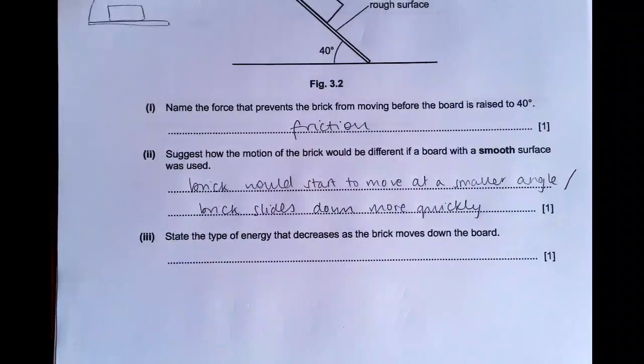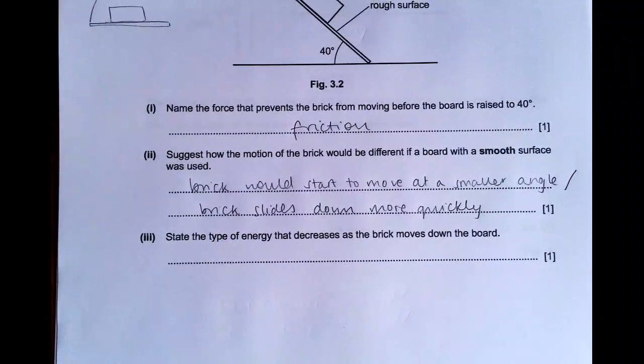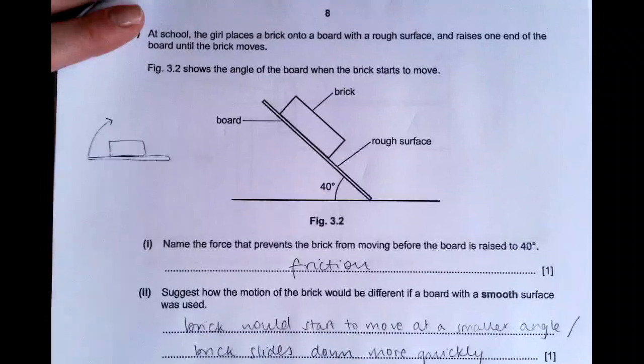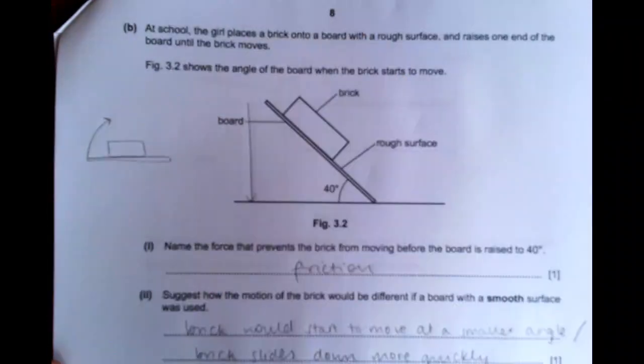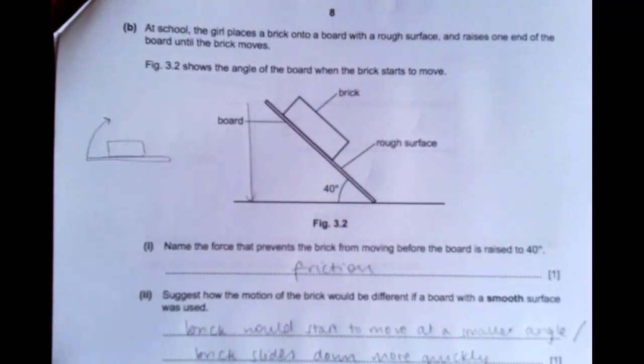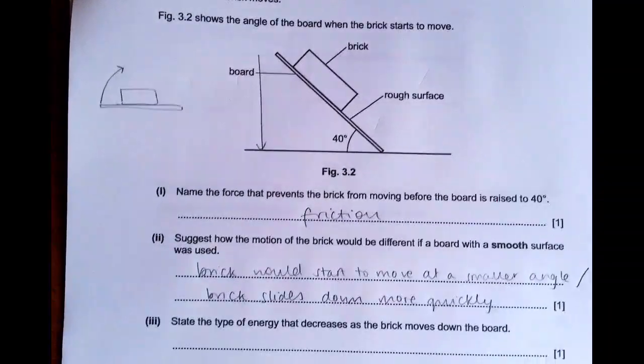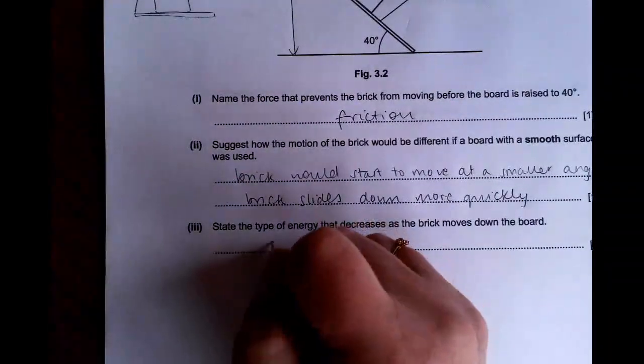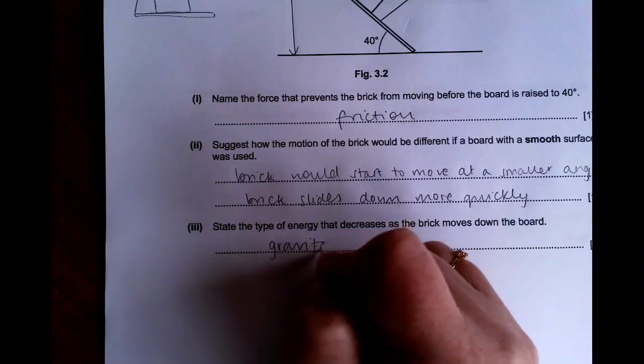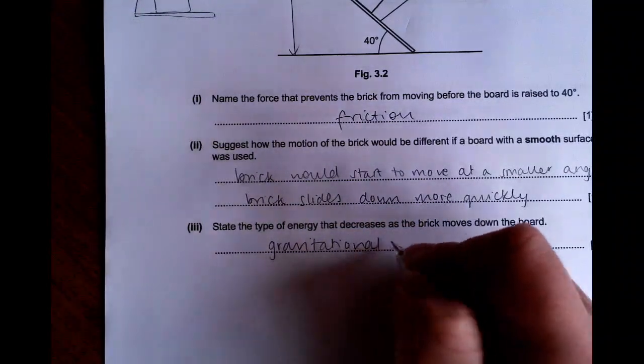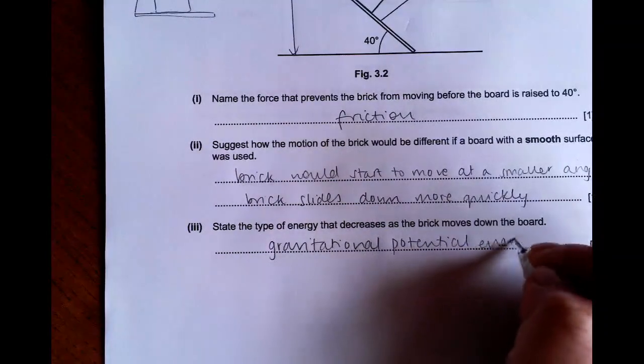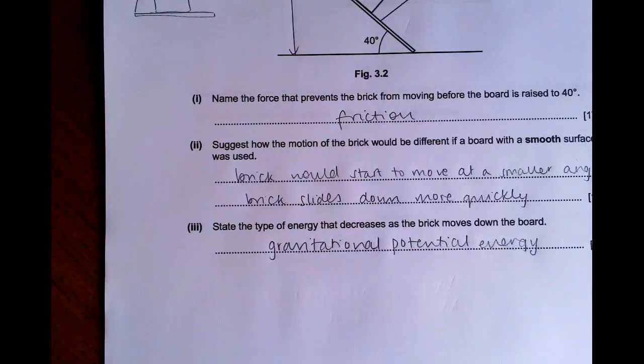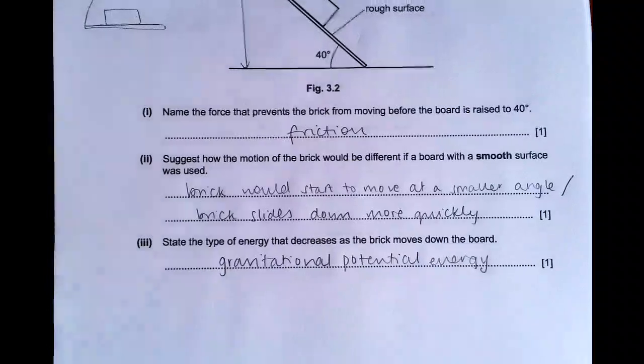So the brick would start to move at a smaller angle, is one thing you could have said. Or you could have said the brick slides down more quickly, or faster. A word like that would be fine. State the type of energy that decreases as the brick moves down the board. So you know that they are moving through a height. The brick is moving down as well as across. So you know that gravitational potential energy is lost. So you just need to write that down.